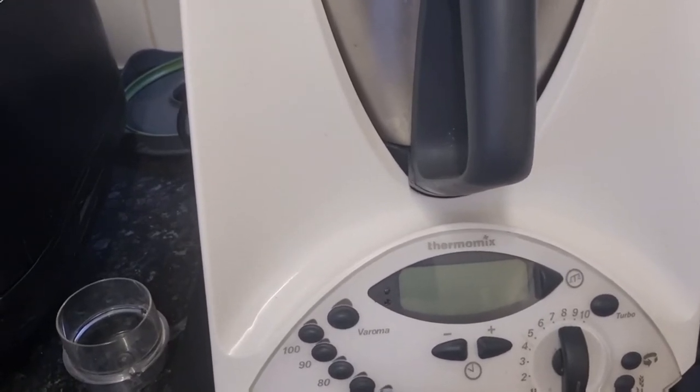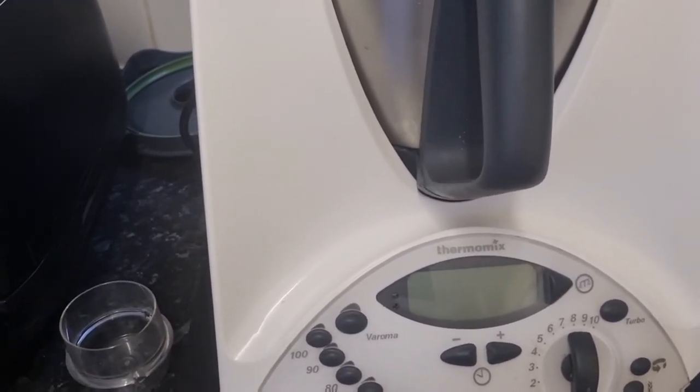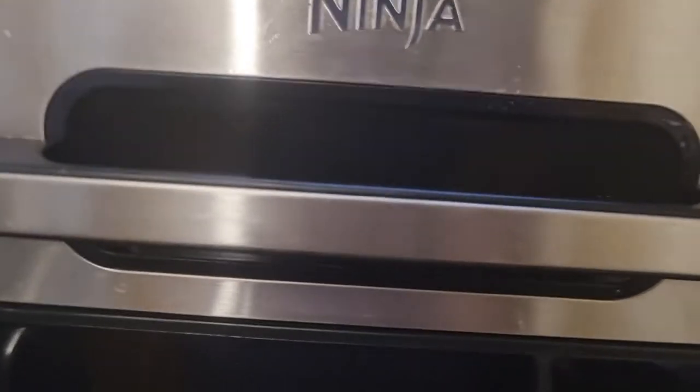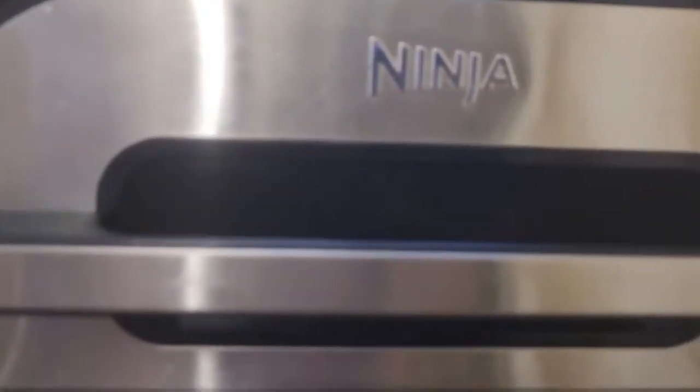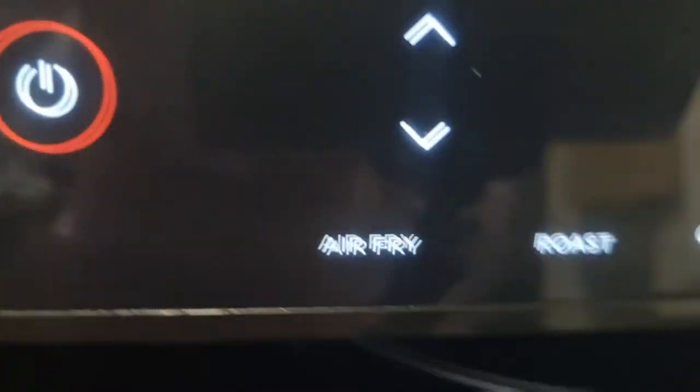Next up it's my Ninja Grill Max. It's probably easier to tell you what this machine doesn't do but I'm going to plug it in. Okay we're plugged in now. What does this machine do? Well it air fries, it roasts, it grills, it bakes, it reheats, it dehydrates. And it's brilliant, it's really good.